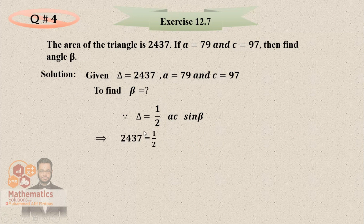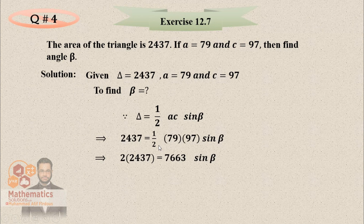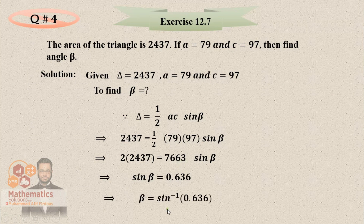Delta equals the area, a = 79, c = 97, and beta is to be found. Multiply 79 × 97 to get 7,663. Divide appropriately, take the inverse sine, and write the last answer in degrees. Beta equals 39 degrees and 30 minutes.